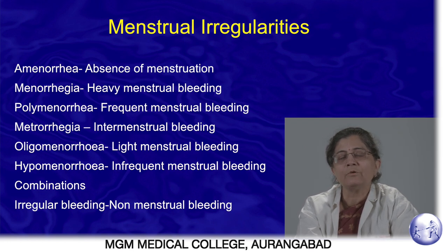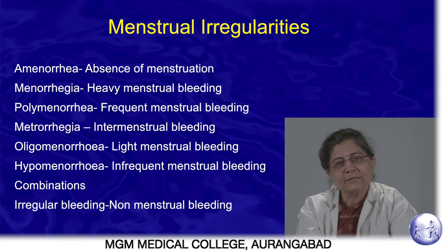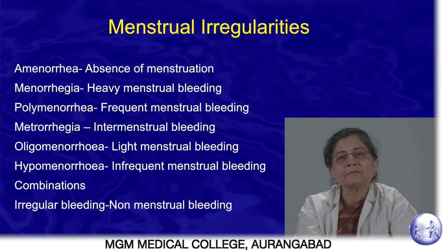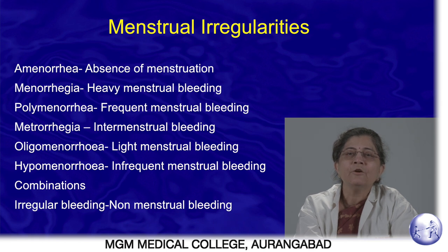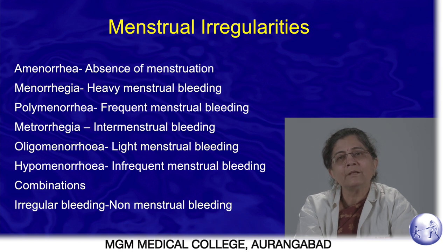Now, why does the menstrual pattern differ? Previously different terms were used. Amenorrhea means absence of menstruation. What was called menorrhagia is now termed heavy menstrual bleeding. Altered frequency — polymenorrhea — is now called frequent menstrual bleeding. Infrequent bleeding, previously oligomenorrhea, is now called infrequent menstrual bleeding. If the bleeding amount is less, it is now called light menstrual bleeding.